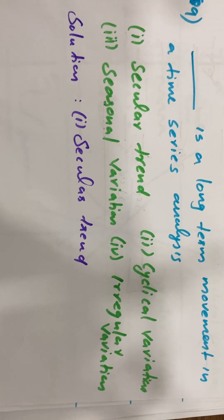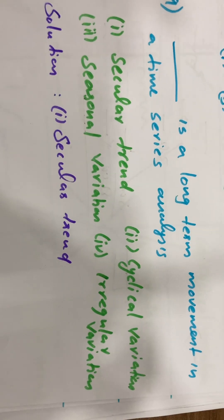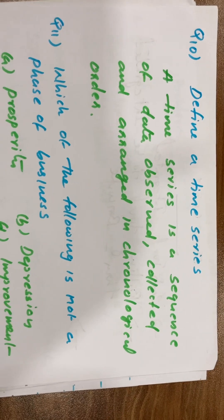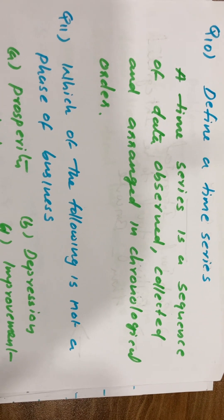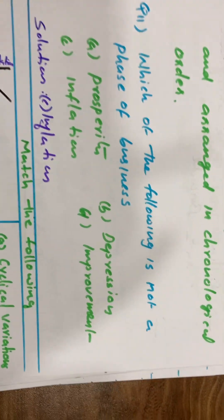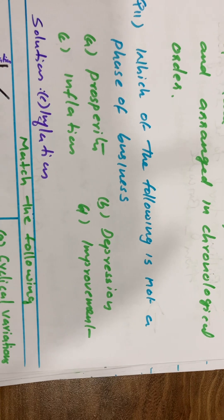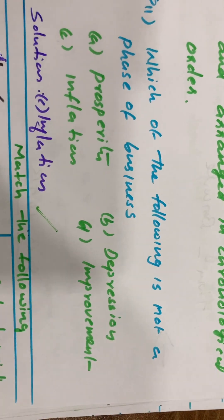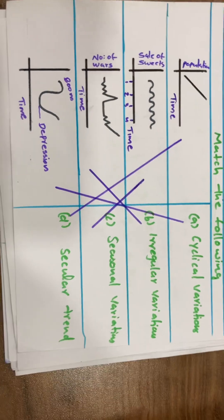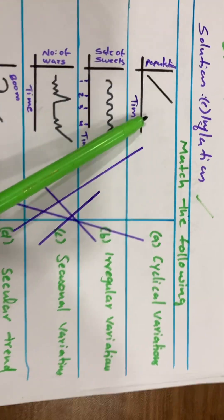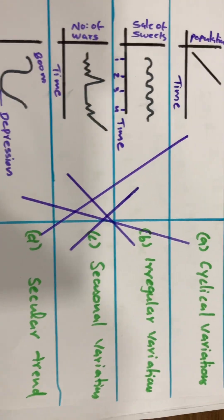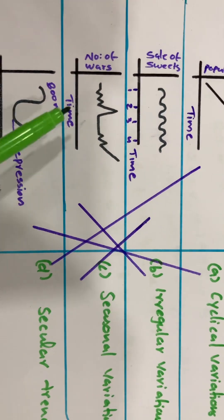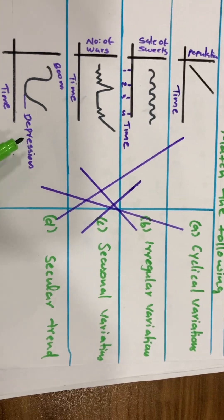Time series is a sequence of data observed, collected and arranged in chronological order. Which of the following is not a phase of business? Inflation is not a phase of business — prosperity, depression and recovery are phases. This is a graph showing secular trend, seasonal variation, irregular variation, and cyclical variation.